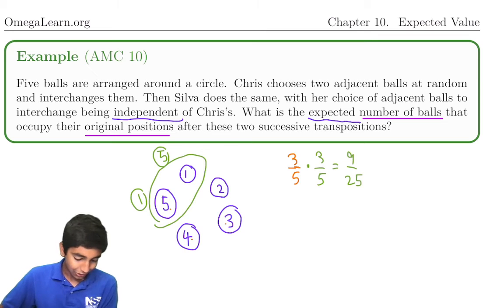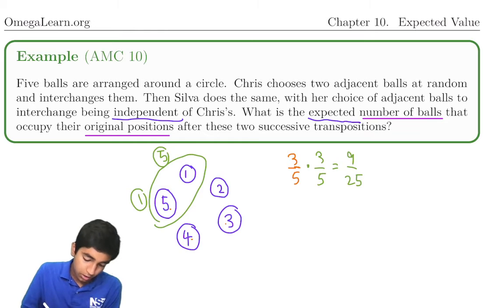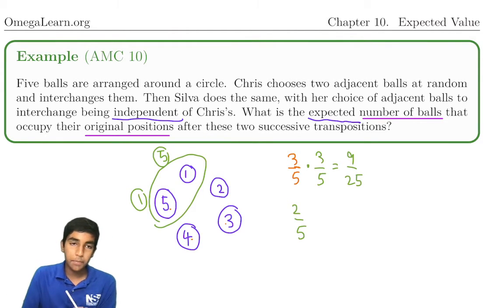Now, what if Silva undoes that? So what's the probability that five was chosen originally as one of the balls? Two-fifths, right? Out of all the balls, two of them are swapped. Two-fifths chance swapped by Chris.